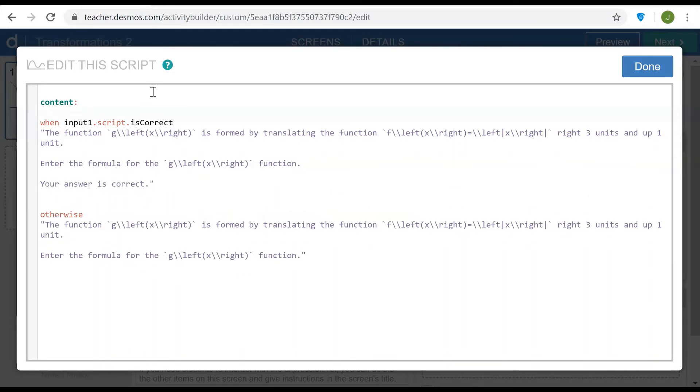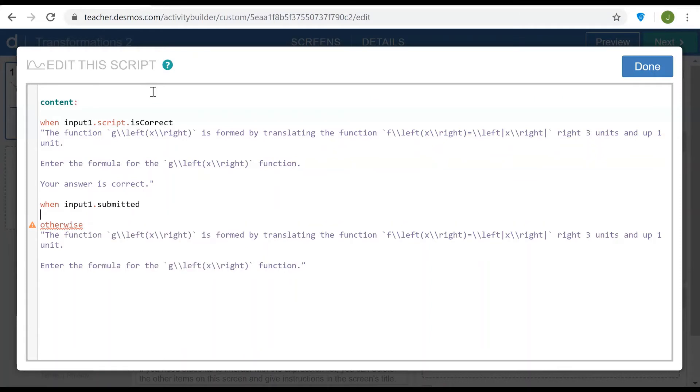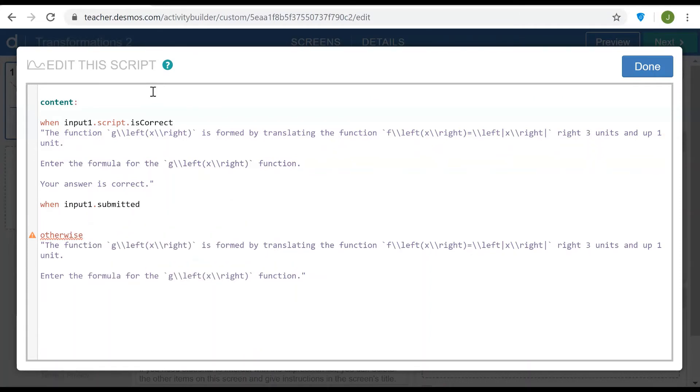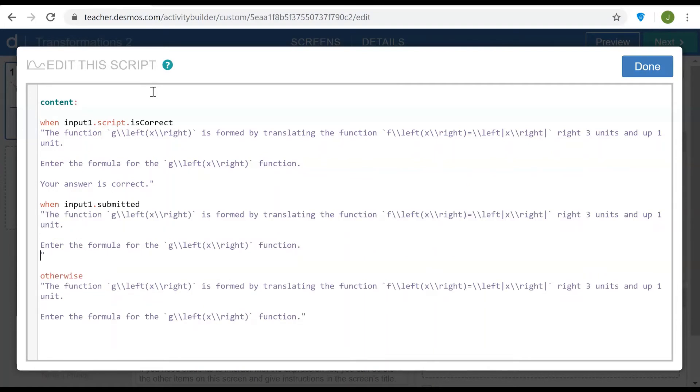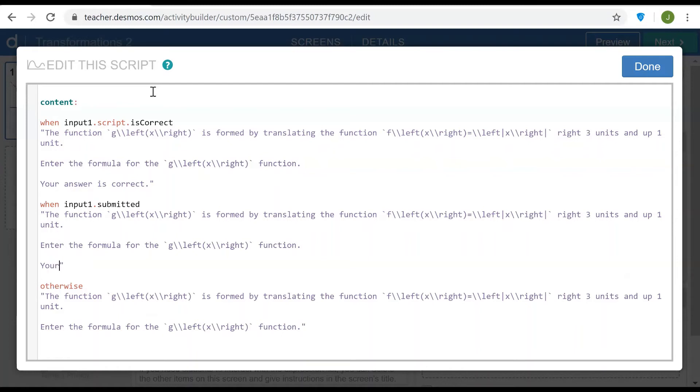And then as a second when input I want this to appear when the answer has been submitted, so let me say input1.submitted. But if the answer is incorrect then here we can put that same initial text but then the statement your answer is incorrect. And just to help the student see their answer we could also add what their answer is here.